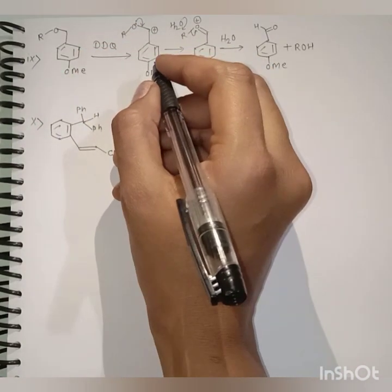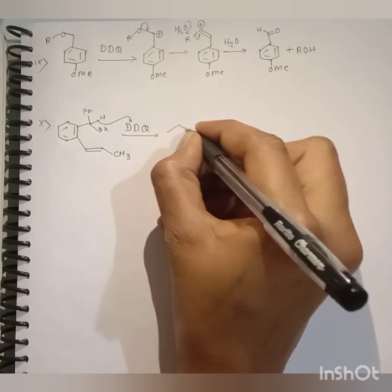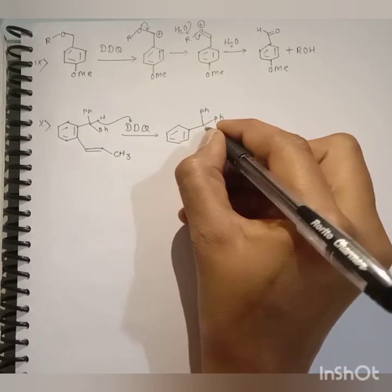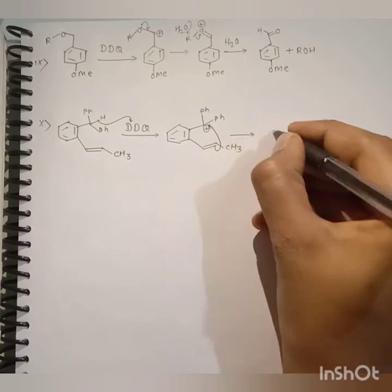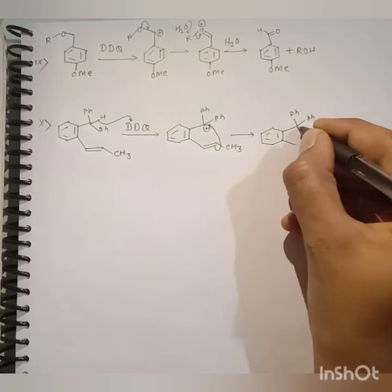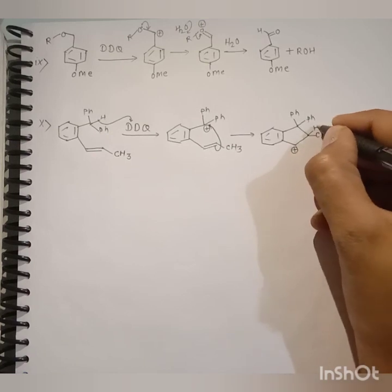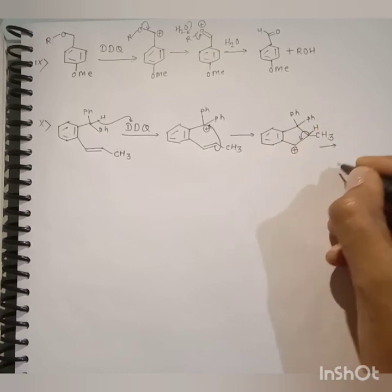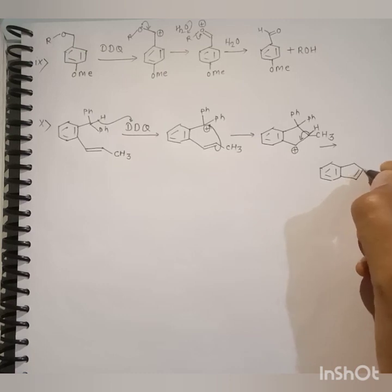In this example also, formation of a benzylic carbocation takes place and it is captured intramolecularly to give the formation of a five-membered ring, which upon proton removal leads to the formation of this product.